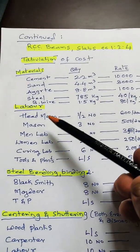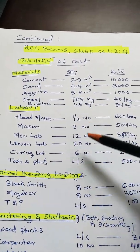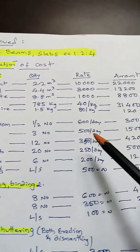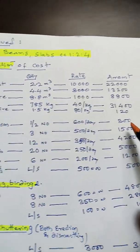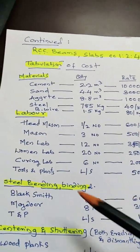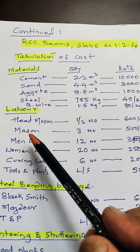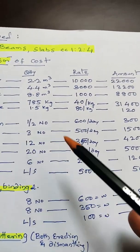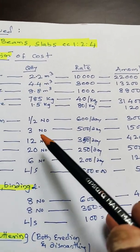For labor: Head mason about half number required, half of the day, so 300 rupees at rate of 600 per day. Mason 3 numbers, so for 10 meter cube you will require 3 masons or skilled labor.